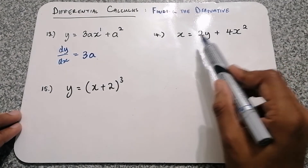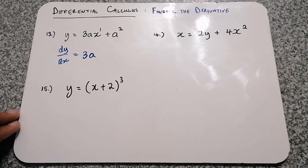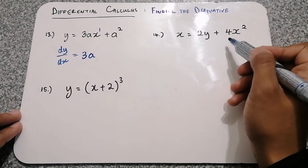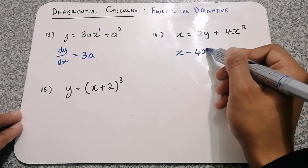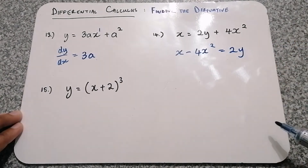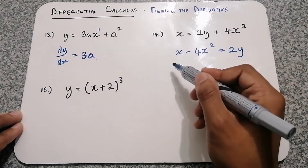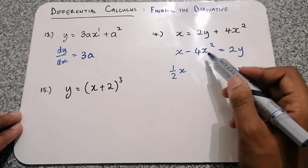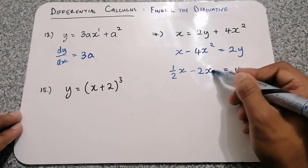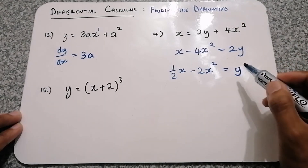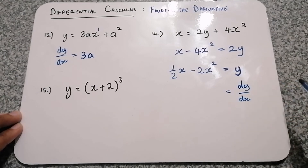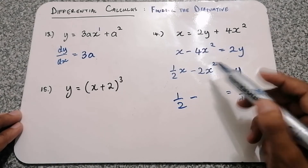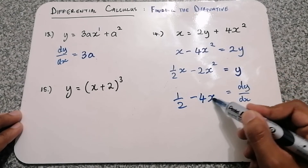For question 14, we have x equal to 2y plus 4x squared. We're finding the derivative of y with respect to x, so we need to make y the subject. Taking the 4x squared to the other side: x minus 4x squared equals 2y. Then dividing by 2 on both sides, the 1x becomes a half x, and negative 4 becomes negative 2. Now we take the derivative: the result is one half, the x disappears, and 2 times negative 2 gives negative 4x.